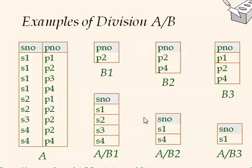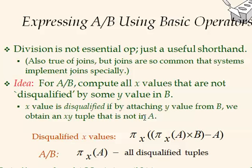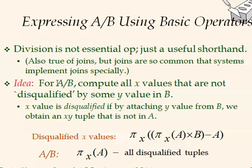Division is not a basic operator because it can be implemented using other operators. Here is how: recall that A has columns X and Y and B has just Y. First, we project A onto X to get all possible X values. Then we take the cross product of that projection with B to get all (X, Y) pairs.